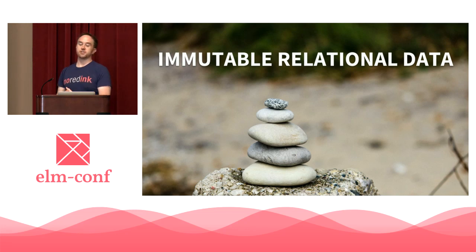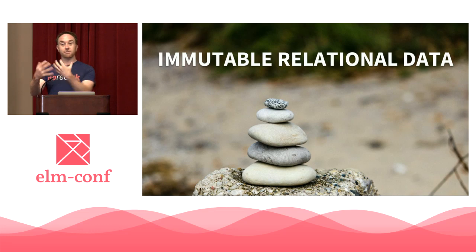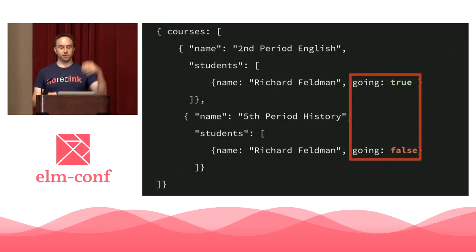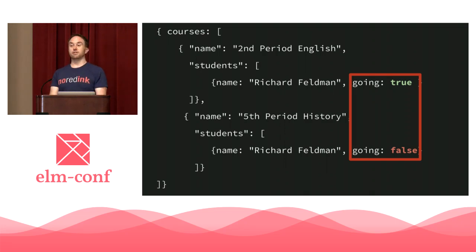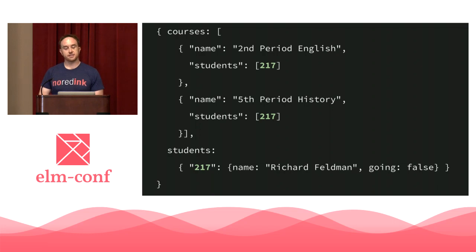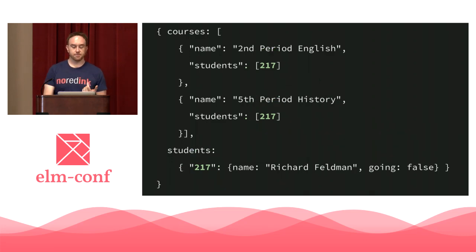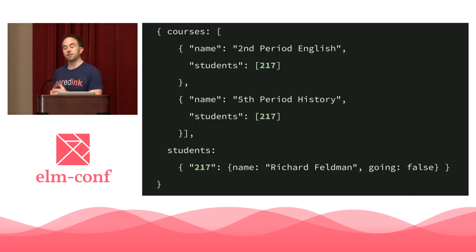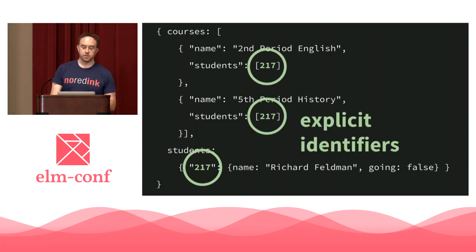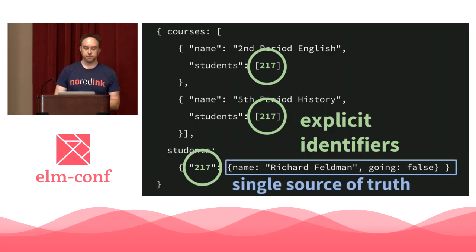So let's move on to immutable relational data. One way to create a single source of truth is by changing the data structure to use explicit identifiers as references rather than memory references. The courses' students field becomes just an array of IDs. ID 217 refers to Richard Feldman, and that's the only place Richard Feldman appears in the whole data model. Everywhere else, it's an identifier referencing that single source of truth.